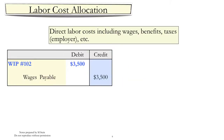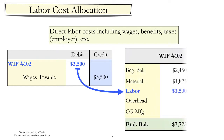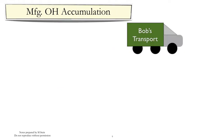Similarly, we could add labor to work in process by debiting the work in process account and crediting something like wages payable.